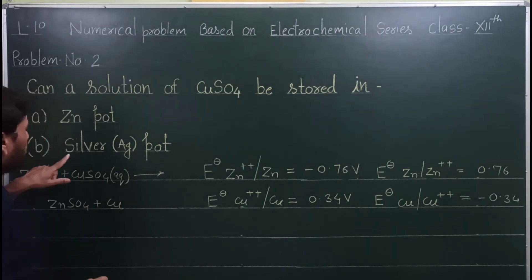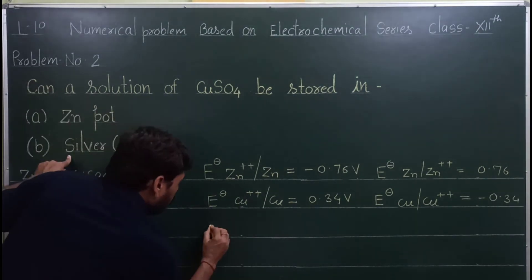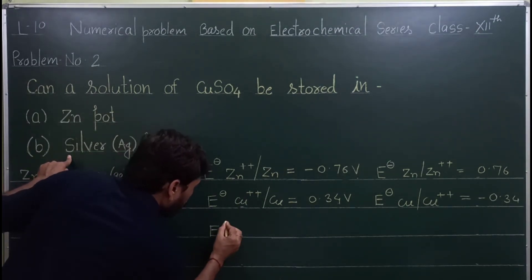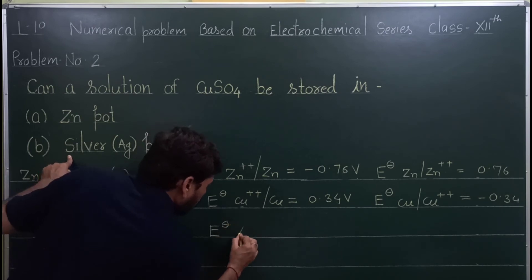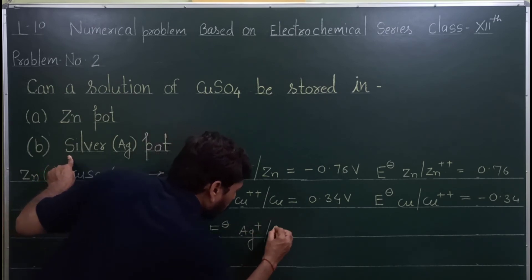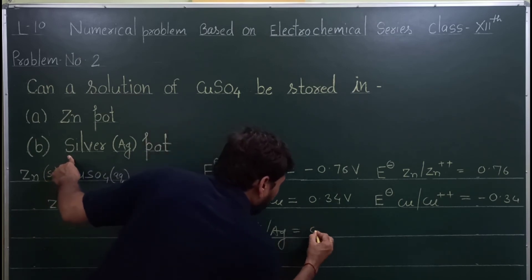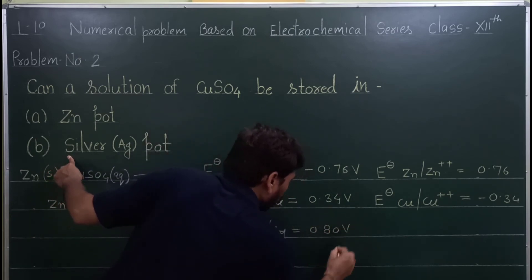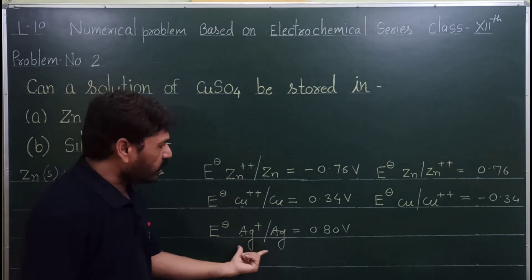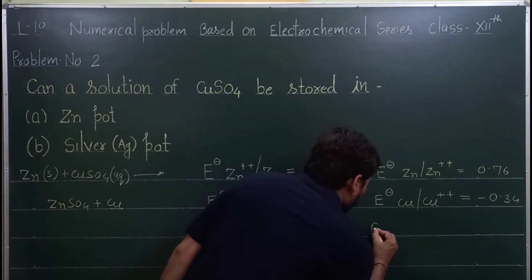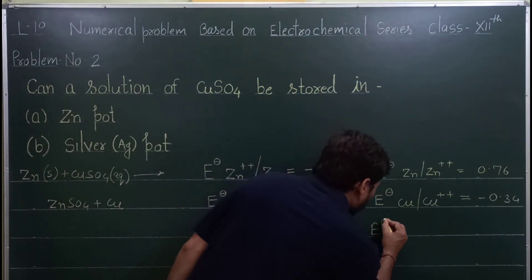अब B का answer देखते हैं — यह silver है। E naught Ag+ / Ag — silver का standard reduction potential होता है +0.80 volt। इसे oxidation potential में convert करें तो —